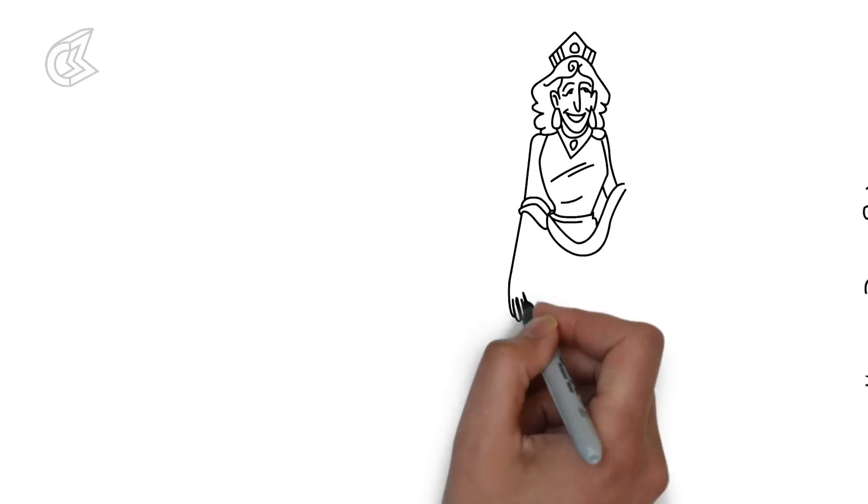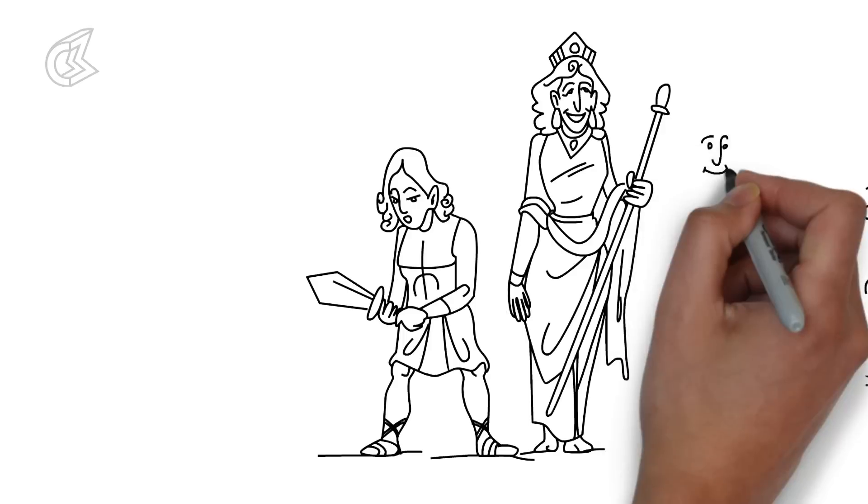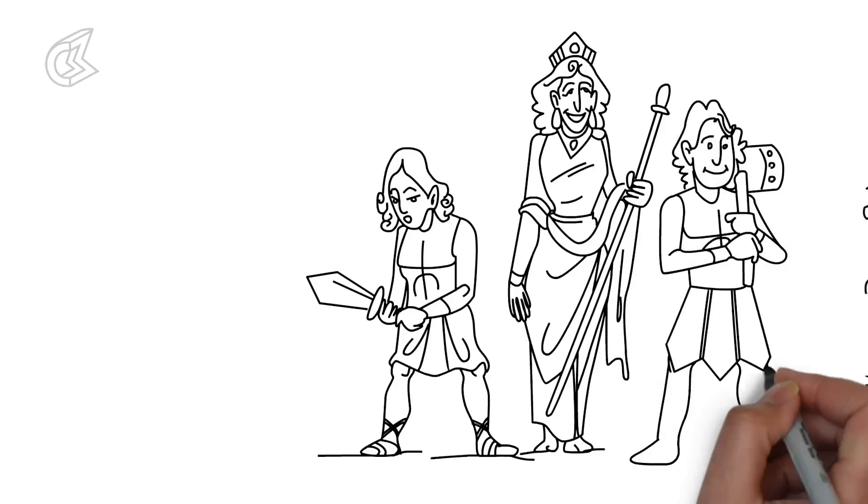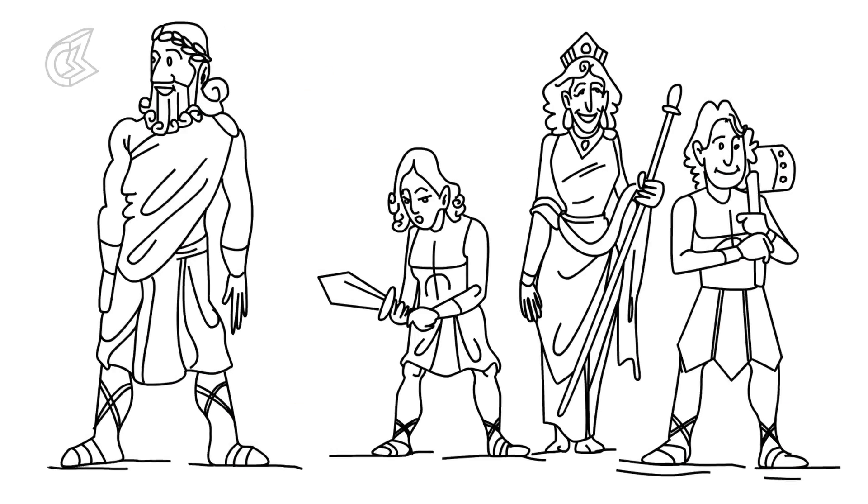Hera gave Zeus many children like Ares, the god of war, and Hephaestus, the god of smiths. But Zeus could never be content with domestic life. He always had eyes elsewhere.